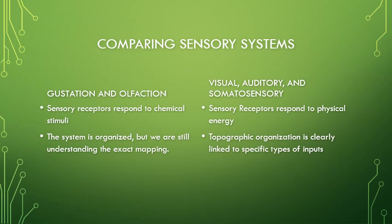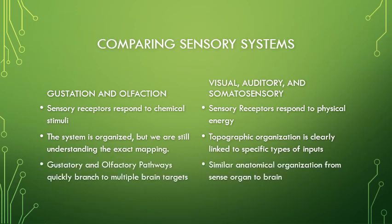In the visual, auditory, and somatosensory systems we see topographic maps, but for the gustatory and olfactory systems we're still trying to understand that mapping. Also, while other sensory pathways show similar anatomical organization from organ to brain, the gustatory and olfactory systems very quickly branch off into other brain areas, including the limbic system involved in emotional processing.